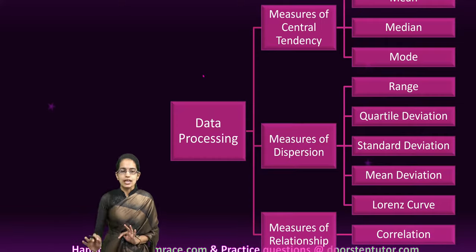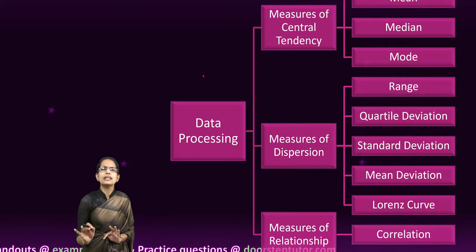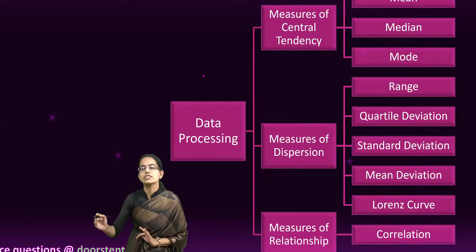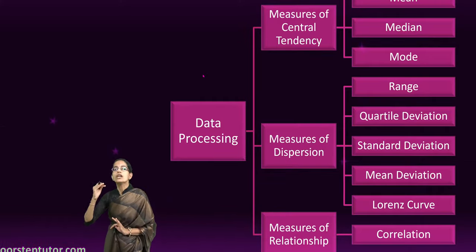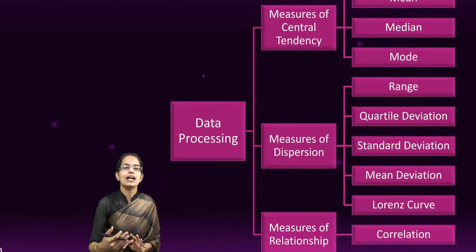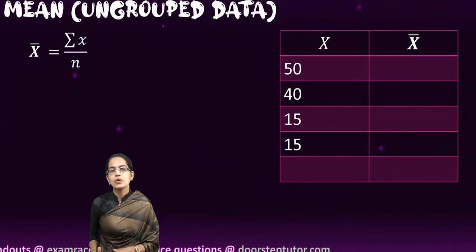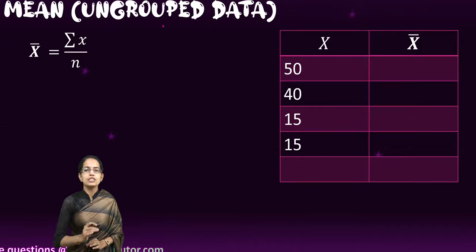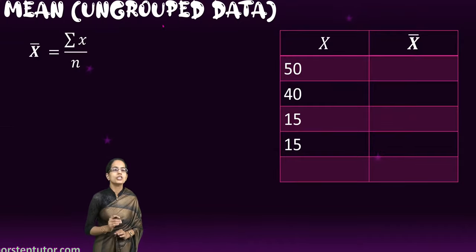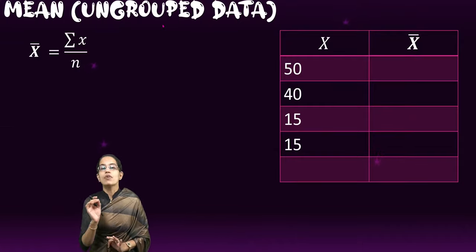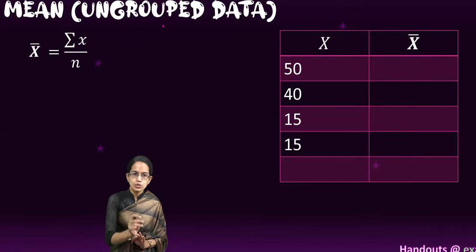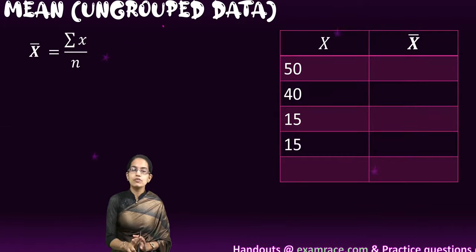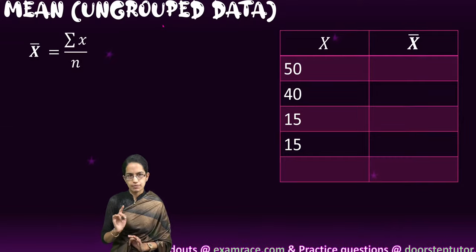Simply put again, data processing in the simplest terms can be explained as measures of central tendency, measures of dispersion, or measures of relation, which we would understand one by one. As we know, under measures of central tendency we have mean, mode, and median. So let's first understand mean — finding out mean for both grouped data as well as ungrouped data, and for both ways we would find the shortcut method as well.